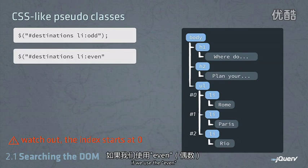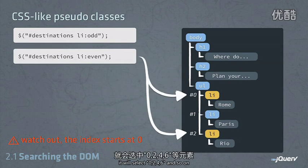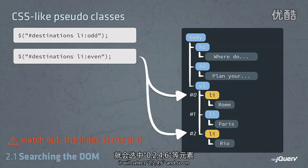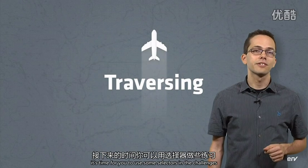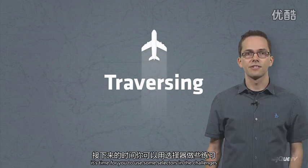If we used :even, it would select zero, two, four, six, and so on. Time for you to use some of these selectors in the challenges.